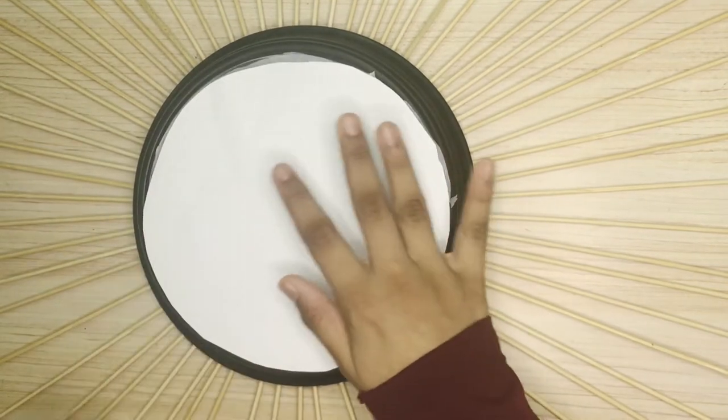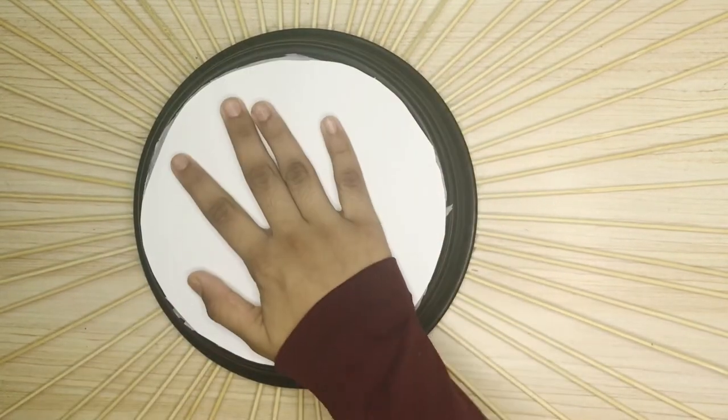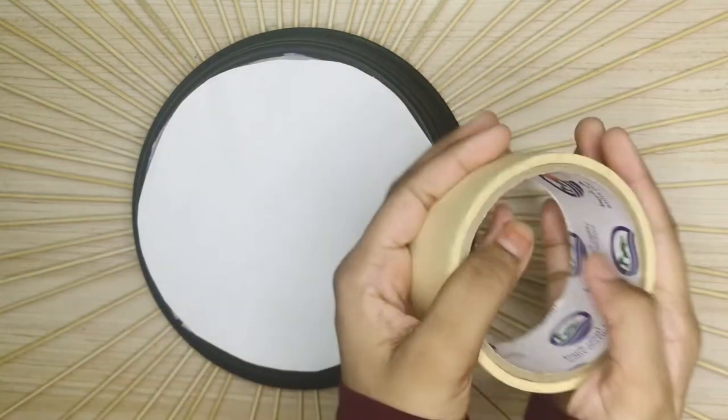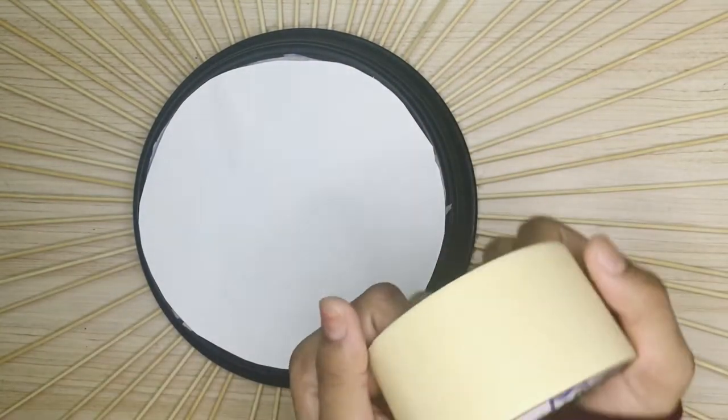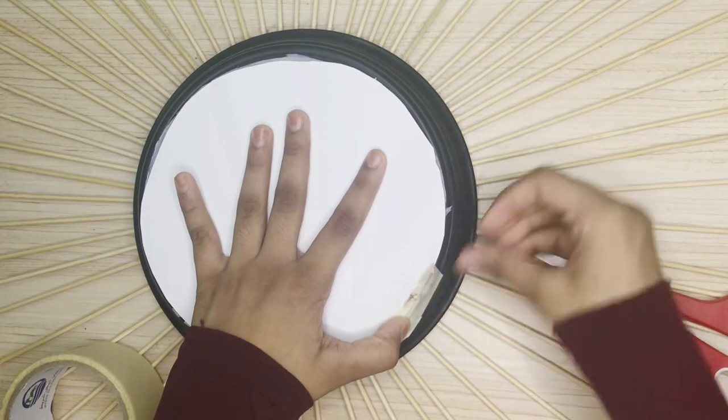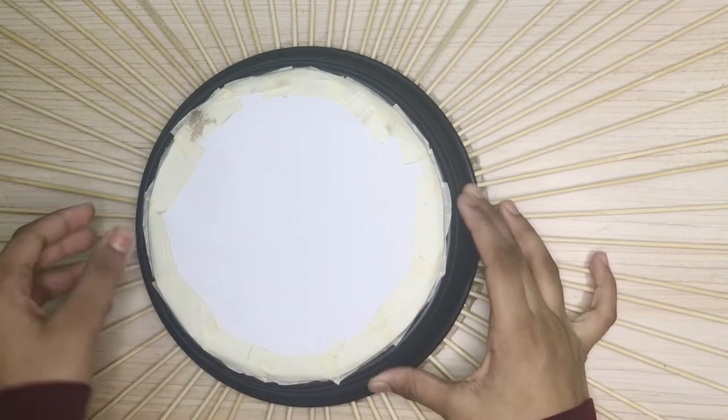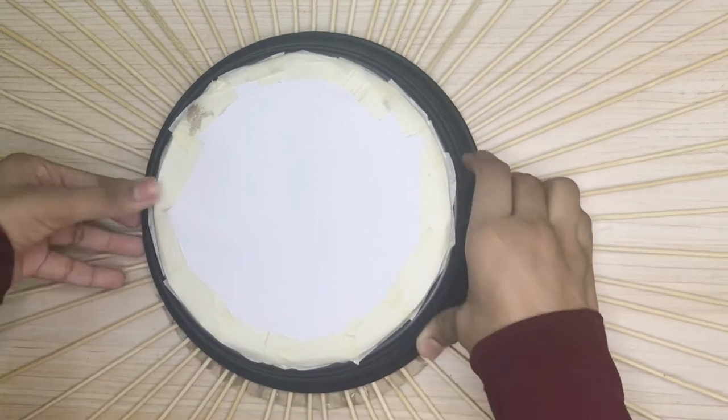Next I'm using masking tape to cover the glass. I'm covering the glass so that the paint doesn't get on it.